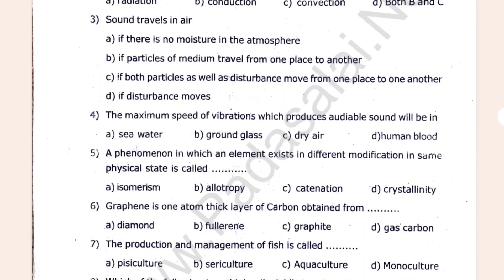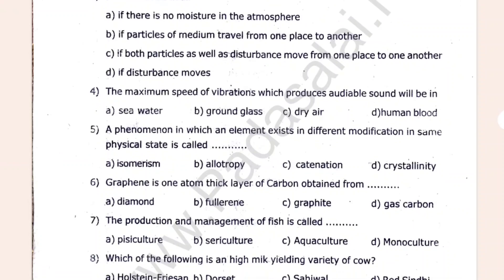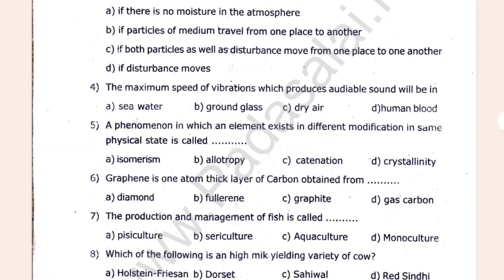Sound travels in air. The maximum speed of vibrations which produces audible sound will be in dash. A phenomenon in which an element exists in different modifications in the same physical state is called as — what?